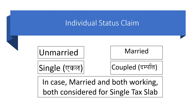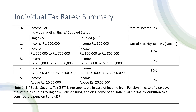Who can claim married or couple status? If you are married, you can obviously claim a couple return. However, if both husband and wife are working, you are not allowed to claim a couple return — both individuals have to file as single. Here is a summary of the rates: ten percent, twenty percent, thirty percent, and thirty-six percent.